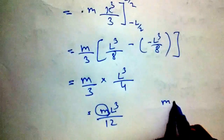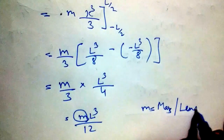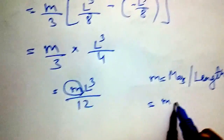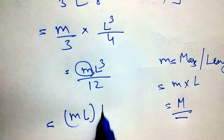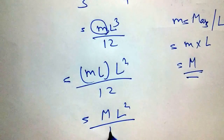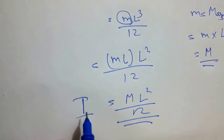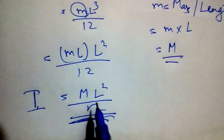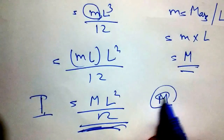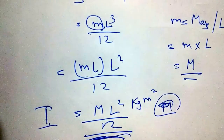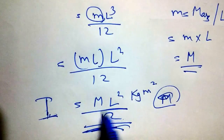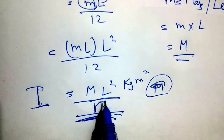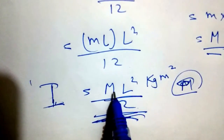Now, m here is mass per unit length, so the total mass M of the rod equals m·L. Substituting, I = M·L²/12. This is the moment of inertia of a rod about its central axis. The units are kg·m², consistent with M·r². The constant 12 arises from the geometry and mass distribution of the object — ultimately, moment of inertia is simply mass multiplied by distance squared.